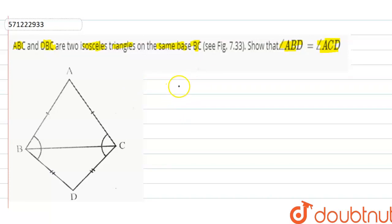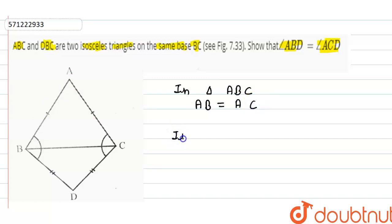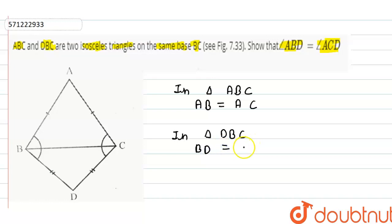In triangle ABC, it is given that ABC is isosceles, so AB is equal to AC. And in triangle DBC, this is also an isosceles triangle, so BD is equal to CD.